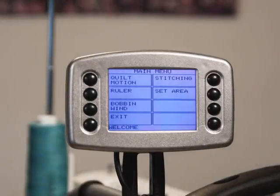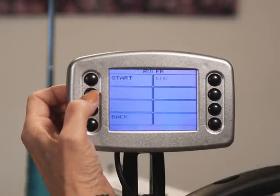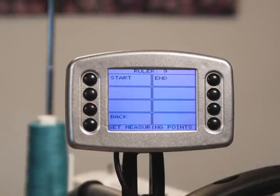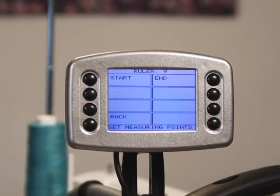The ruler button allows you to measure your quilt blocks width and height as well as your overall quilt width. You can also use the ruler to measure the entire work area to help determine the length of your pantographs.